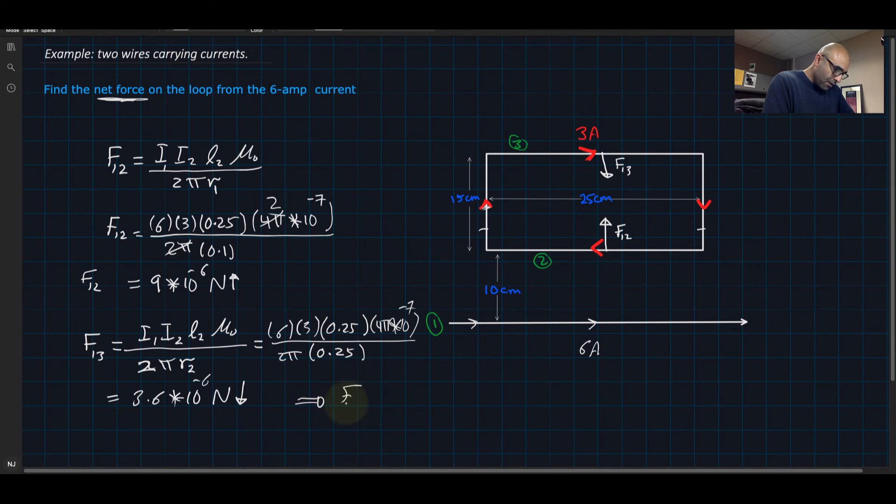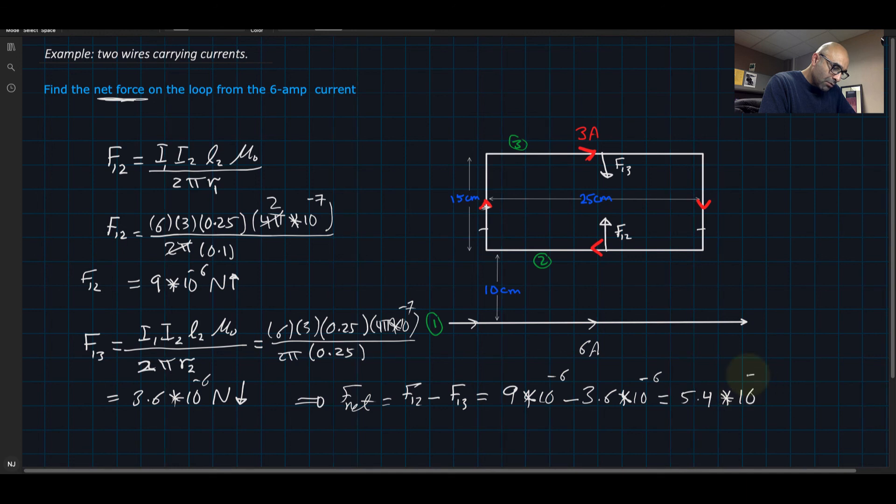I'm going to find F net. I'll put this to be the positive side because it's going up in the positive y direction. F net equals F12 minus F13, which equals 9 times 10 to the minus 6 minus 3.6 times 10 to the minus 6. The net force is 5.4 times 10 to the minus 6 newtons.